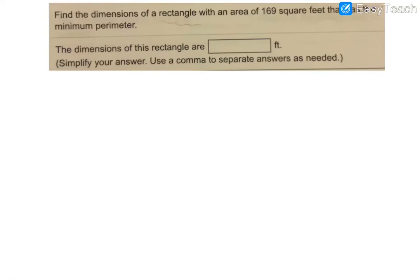In this video, we are going to work on optimization problems. So in this first example, we are being asked to find the dimensions of a rectangle with an area of 169 square feet that also has a minimum perimeter.